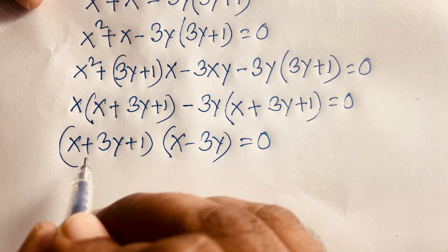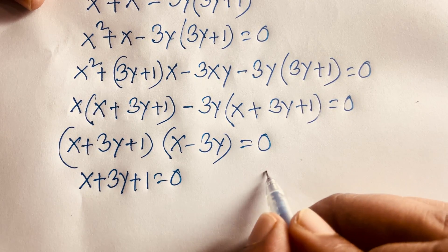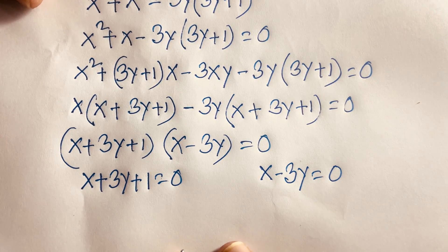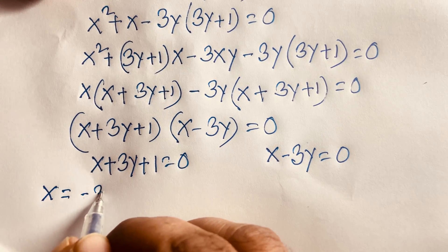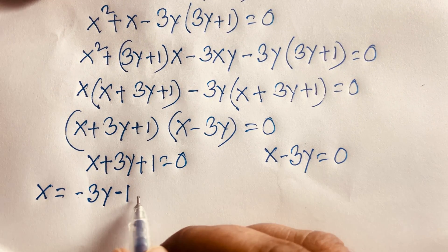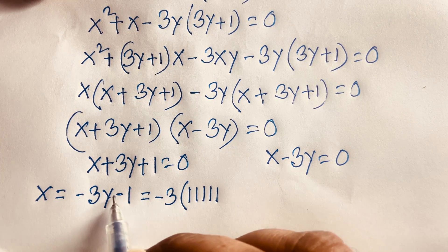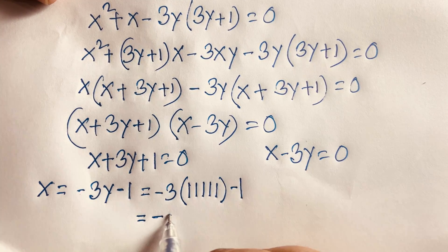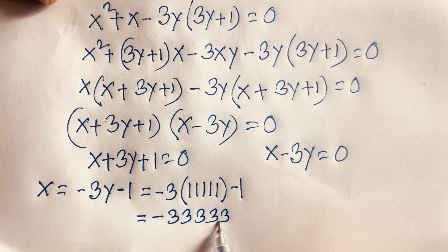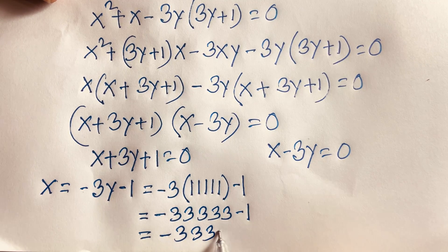So we find two cases. Case one: x + 3y + 1 = 0, and case two: x − 3y = 0. From case one, x = −3y − 1. Remember y = 11111, so it becomes −3(11111) − 1 = −33333 − 1, giving us the final answer x = −33334.